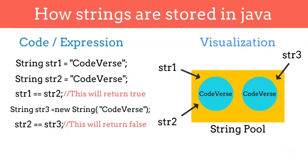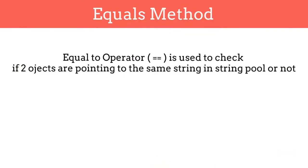Now if we don't want to check the reference, we just want to check the values of two variables. So here the equals method comes into the picture.